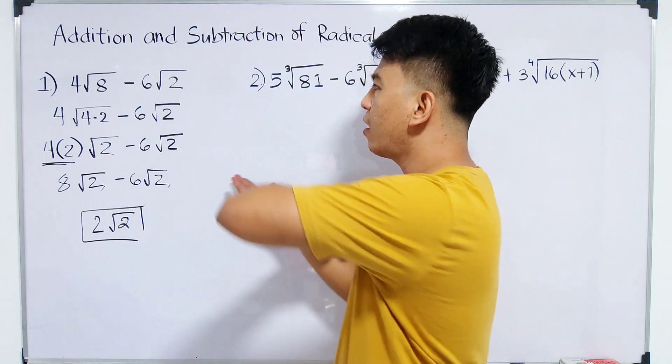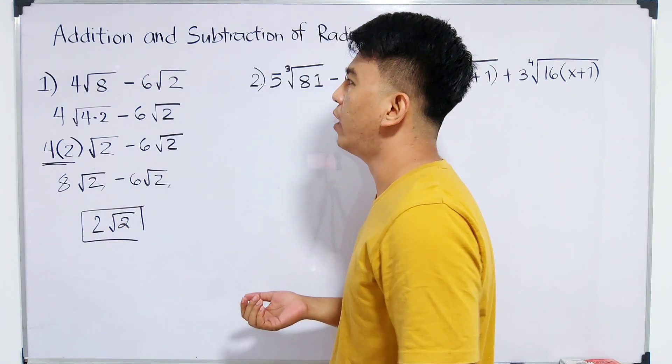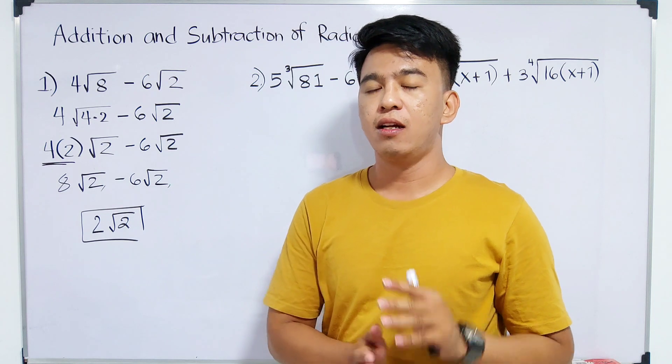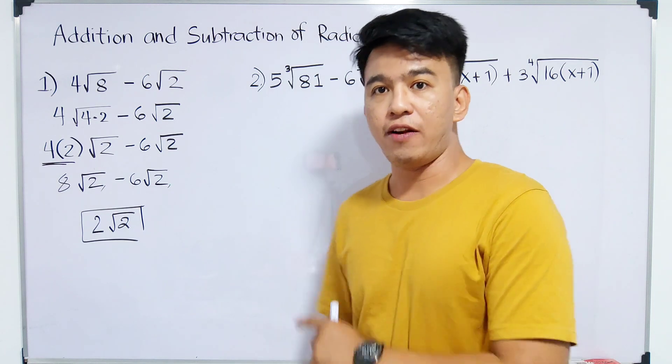So I hope you understood the method we used for number 1 on how to subtract radical expressions with different radicands.